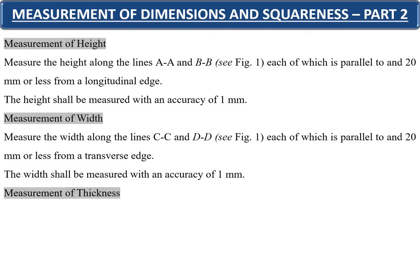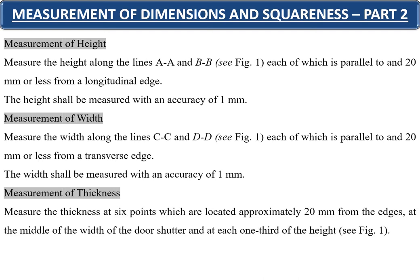The measurement of thickness is taken at 6 points located approximately 20 millimeters from the edges, at the middle of the width of the door shutters, and at each one-third point of the height as shown in the photograph.